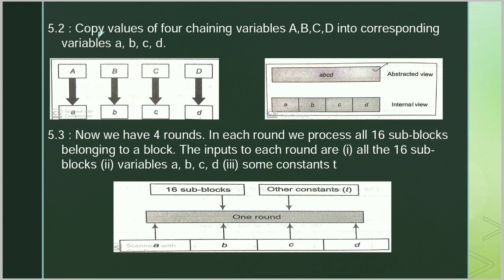In Step 5.3 we have 4 rounds. Basically MD5 Algorithm में number of rounds 4 होते हैं। In each round we process all 16 sub-blocks belonging to a 512-bit block. The inputs to each round are: all 16 sub-blocks, 4 chaining variables A, B, C, D, and constants T. So 1 round of MD5 Algorithm takes 3 inputs: 16 sub-blocks, chaining variables A, B, C, D, and constants T।